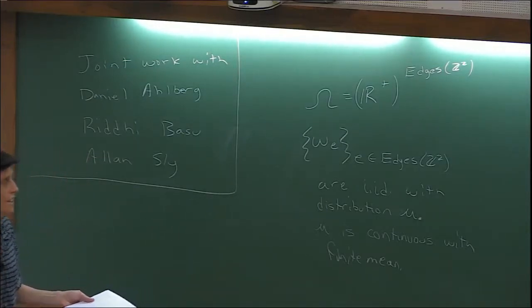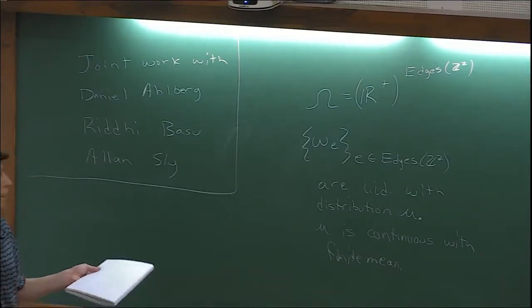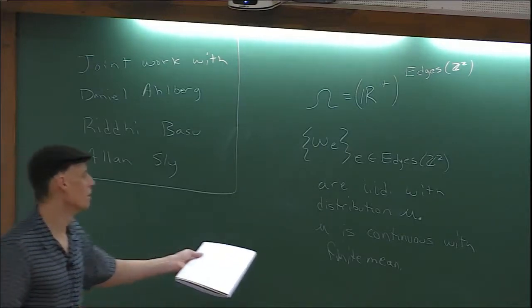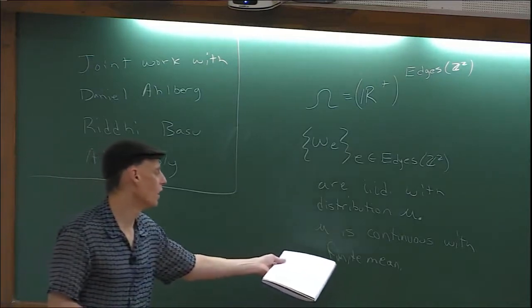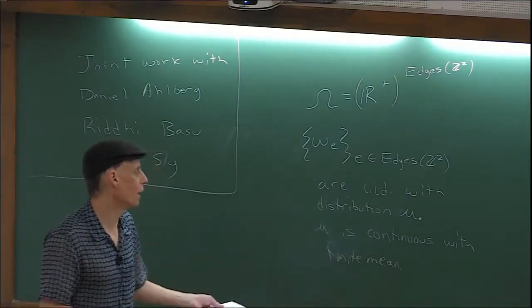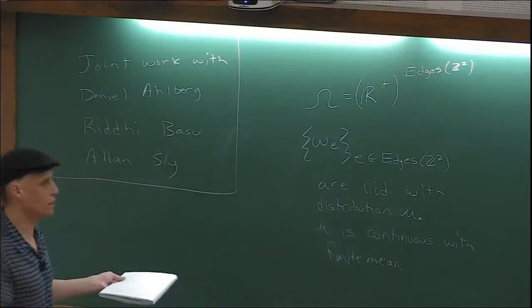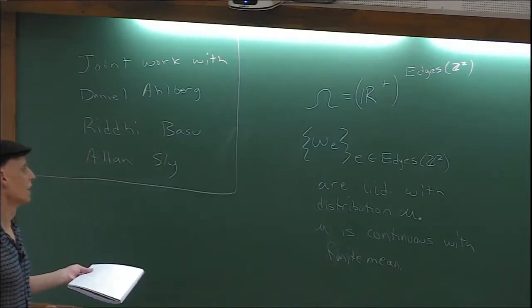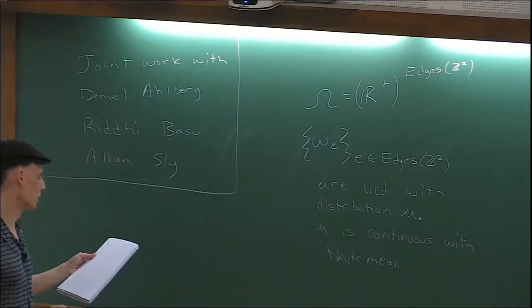In the first passage percolation part, there's neither anything lost by restricting to that specific model, nor anything gained — if we know one specific model, you might think we know a lot more, but actually in this case we don't.